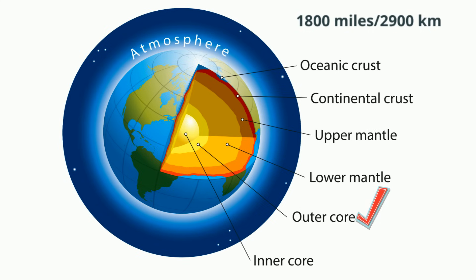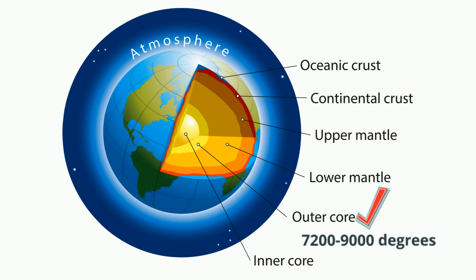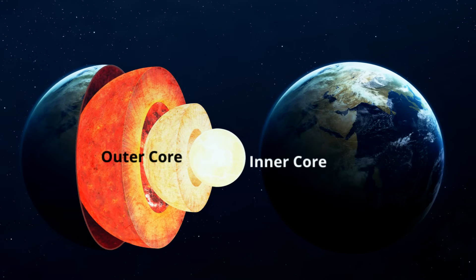The outer core is composed mostly of iron and nickel with metals found in liquid form. The outer core reaches temperatures of 7,200 to 9,000 degrees Fahrenheit and is estimated to be about 1,400 miles thick or 2,300 kilometers. The inner core is the hottest part of our planet and has temperatures between 9,000 and 13,000 degrees Fahrenheit.